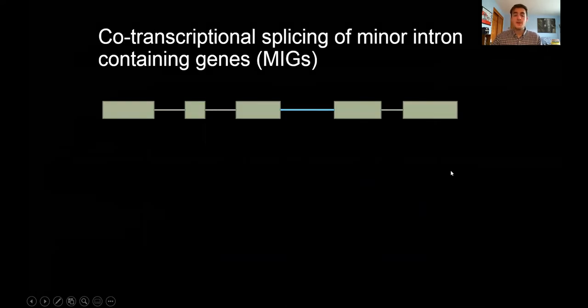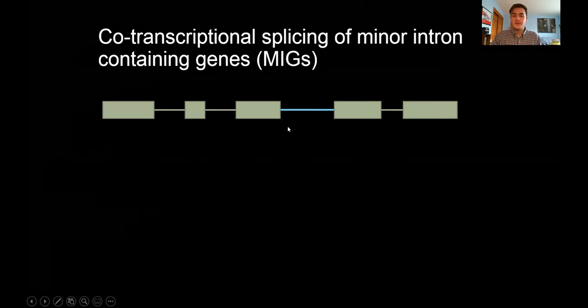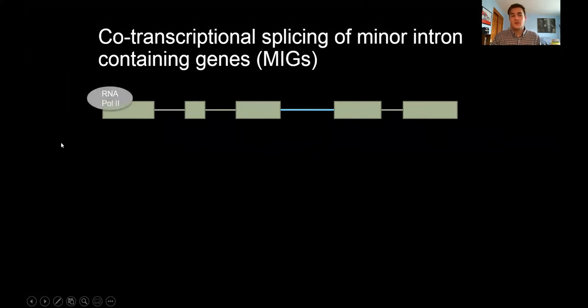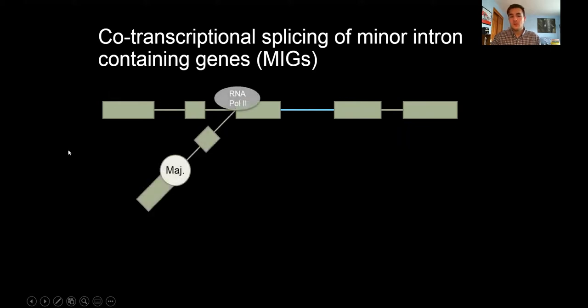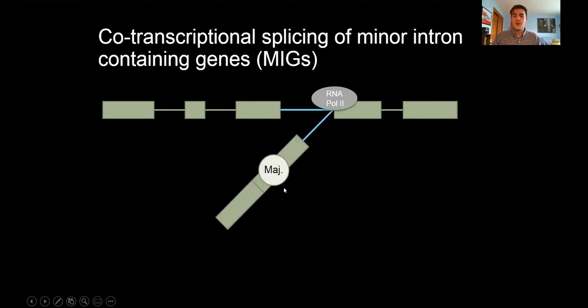Minor intron containing genes, or MIGs, which I'll say for the rest of my talk, have complex co-transcriptional splicing because they often have a single minor intron embedded in genes that contain mostly major introns. So when RNA polymerase 2 transcribes this gene and the major intron becomes available, the major spliceosome will assemble and splice out this intron. But when the minor intron is transcribed, the major spliceosome cannot recognize this intron type. It dissociates, and the minor spliceosome must be recruited to recognize this minor intron.